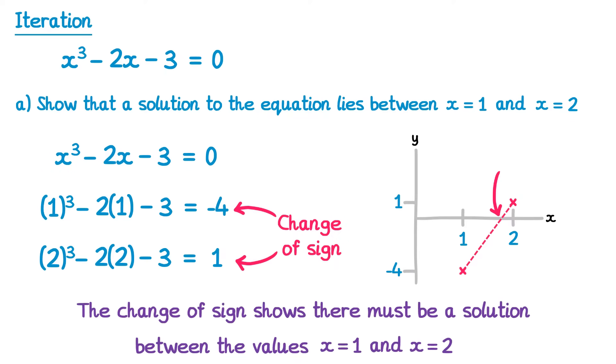So what we can say here is that the change of sign shows there must be a solution between the values x equals 1 and x equals 2. You should note that this method only works when the equation is equal to 0. If the equation isn't already equal to 0, just rearrange it so that you get 0 on the right hand side. Then if you notice a change of sign, you know there's a solution between those two x values.